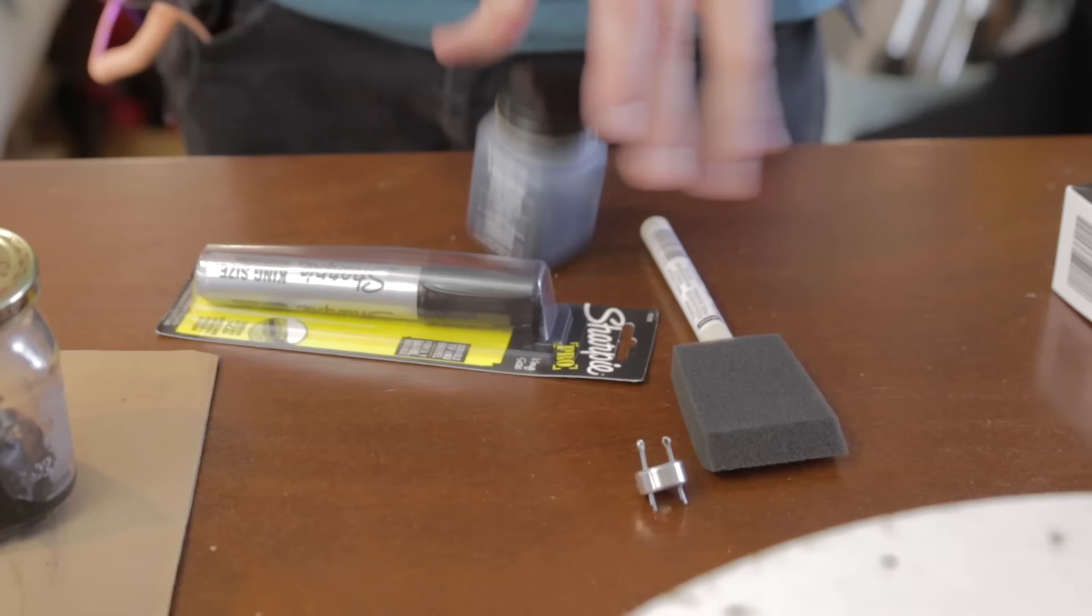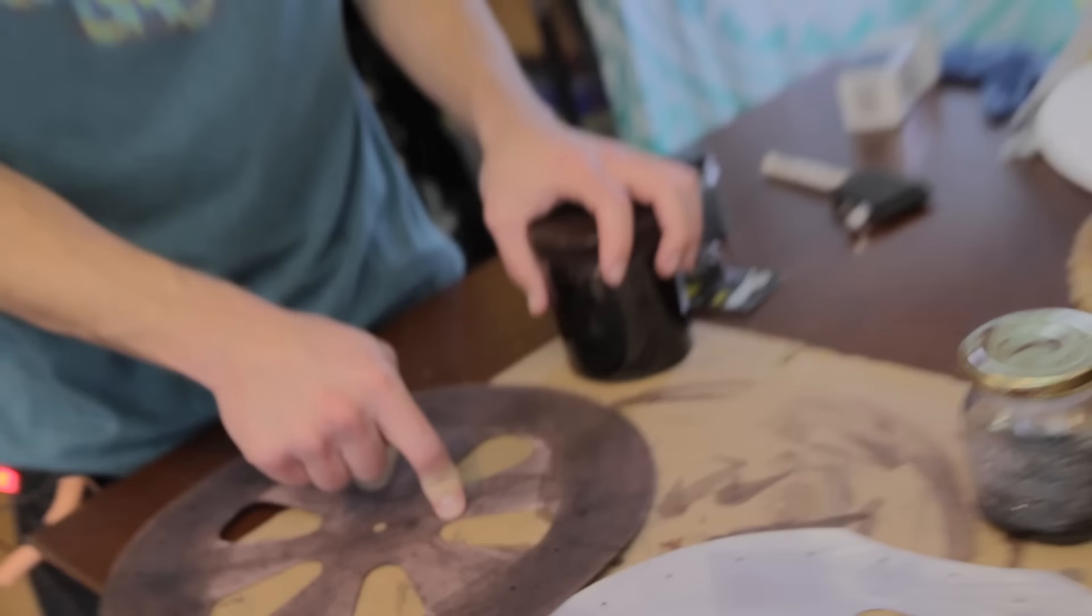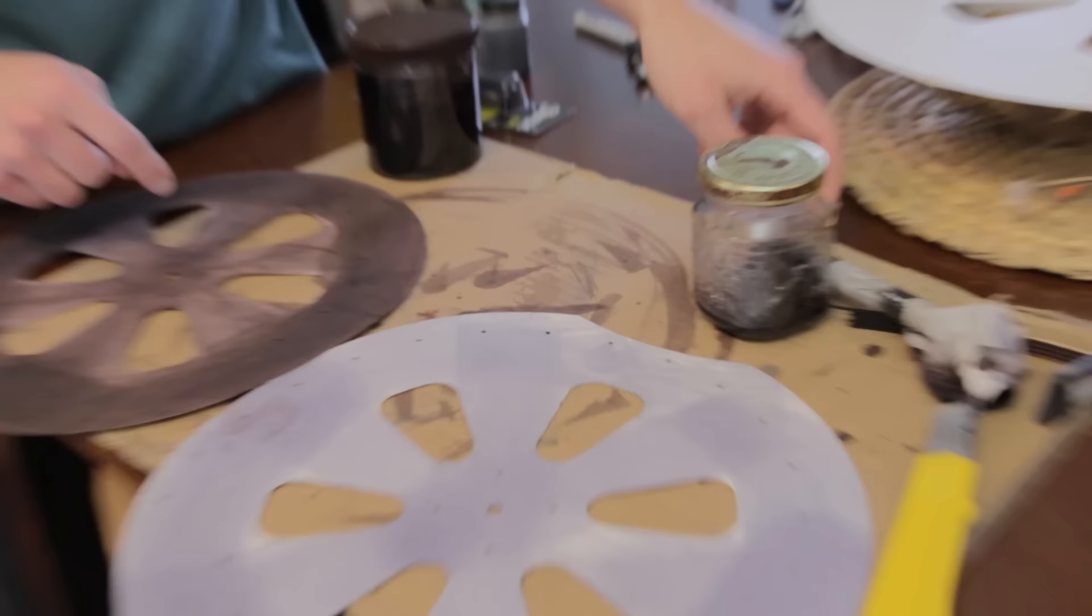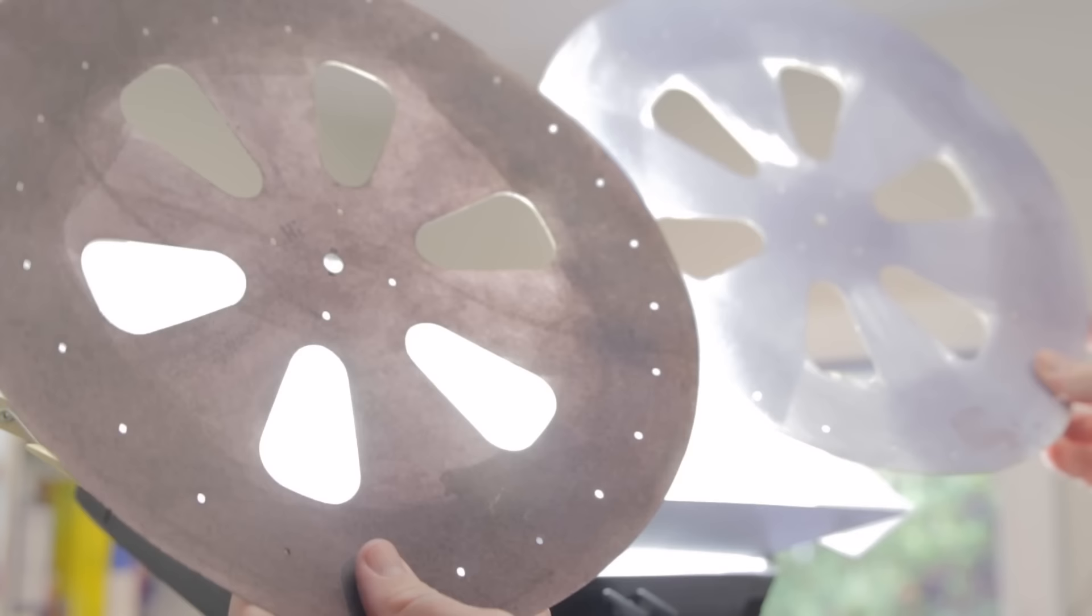Have you ever had one of those projects you started thinking it was going to take a week? And then two weeks later... So we've got two methods that kind of failed for painting the disc darker. It's RIT dye and Sharpie juice. I just took an old Sharpie and mixed it with some alcohol. And the reason we want it to be dark is to block light from coming through the disc itself.